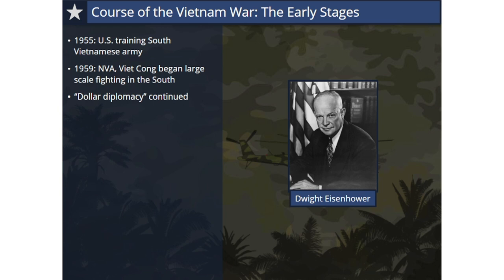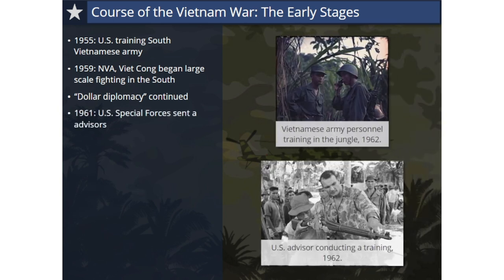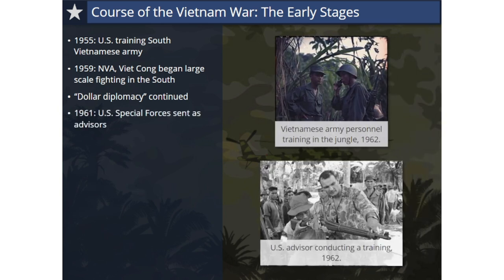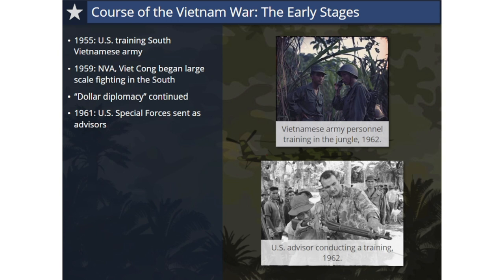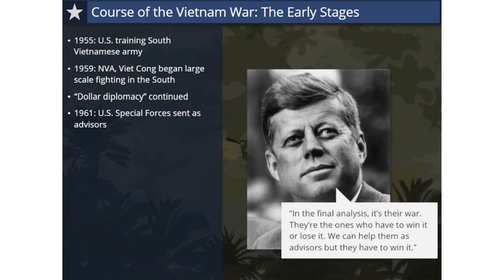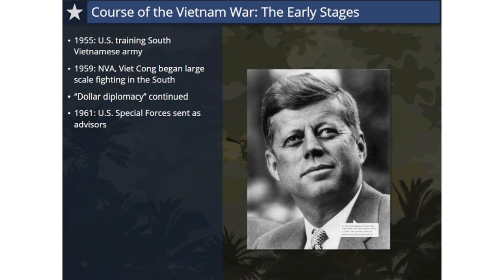His successor, President John F. Kennedy, in 1961 began sending members of the U.S. Special Forces as military advisers to South Vietnam. Kennedy did not want to lose another country to communism, but he also stated, 'In the final analysis, it's their war. They're the ones who have to win it or lose it. We can help them as advisers, but they have to win it.'